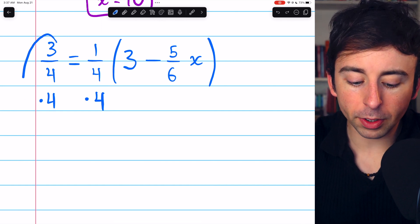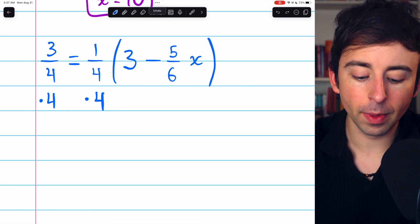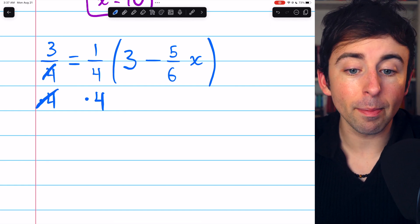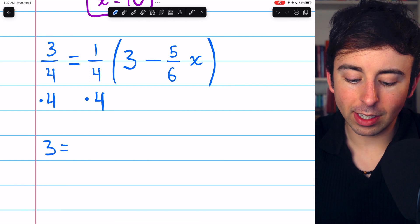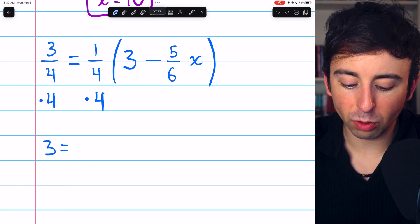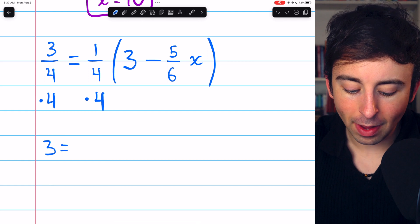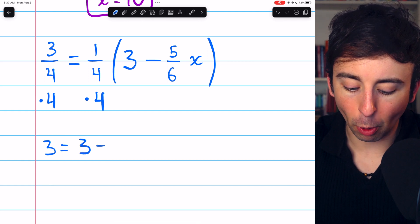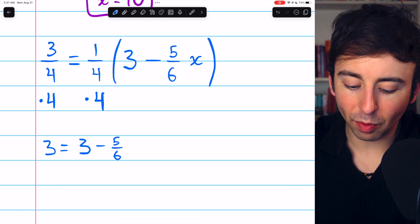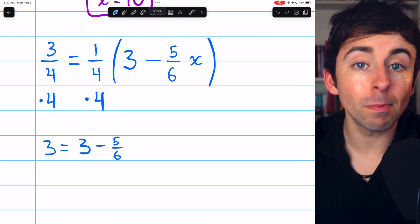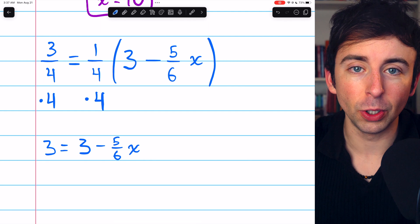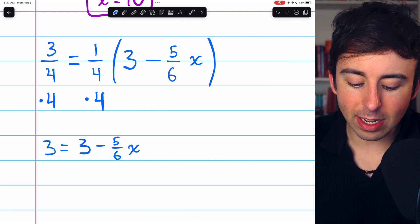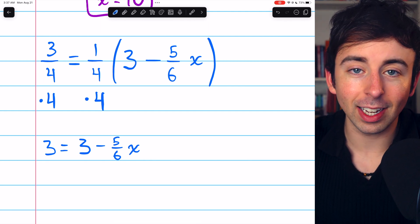On the left, when we multiply 3/4 by 4, the denominator cancels out with that multiplication by 4 and just leaves us with 3. On the right, 1/4 times 4 is just 1, so those cancel out, and we're left with the thing in parentheses. But now that we've got rid of the coefficient by multiplying by 4, the parentheses aren't necessary to include. So we have 3 equals 3 minus 5/6x.